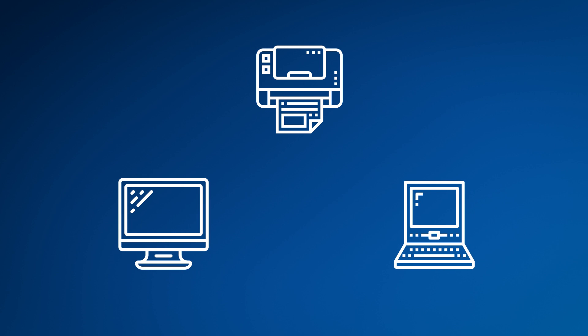So when do you want to make a DHCP reservation? Anytime a device on your network needs the same IP address from your router. For example, if you have a printer that's used by multiple computers, it would be a good idea to set a DHCP reservation. That way, the IP address of the printer will always be the same, making it easier for the computers and the printer to communicate.